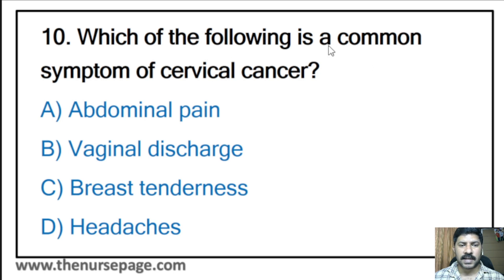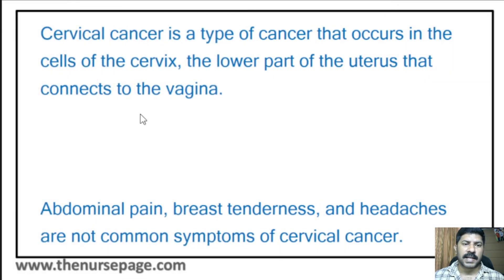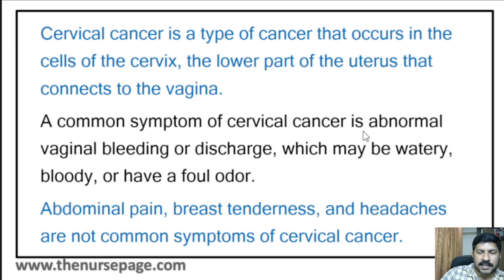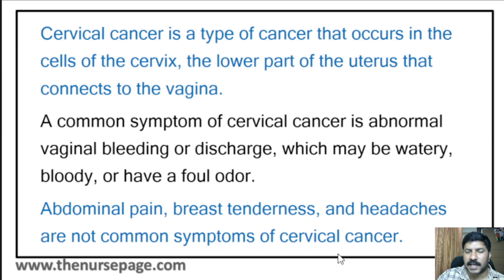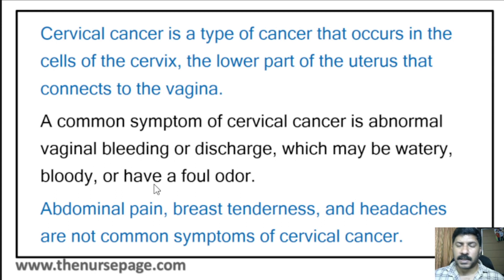Tenth question: Which of the following is a common symptom of cervical cancer? Abdominal pain, vaginal discharge, breast tenderness, or headaches? The correct answer is vaginal discharge. Cervical cancer occurs in the cells of the cervix, the lower part of the uterus that connects to the vagina. A common symptom is abnormal vaginal bleeding or discharge, which may be watery, bloody, or have a foul odor. Abdominal pain, breast tenderness, and headaches are not common symptoms.